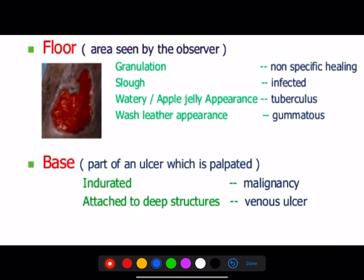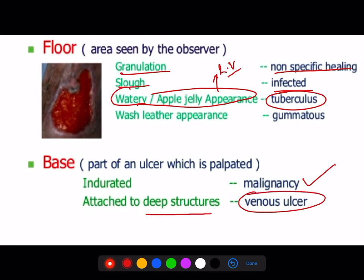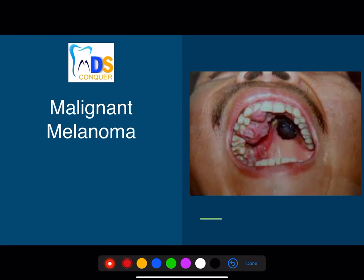Important appearances: granulation tissue = non-specific healing; slough = syphilis (infected ulcer). Apple jelly appearance is seen in tuberculosis of the skin, called lupus vulgaris. Induration is a feature of carcinoma. Attachment to deep structures is specific to venous ulcers. A black color indicates malignant melanoma.